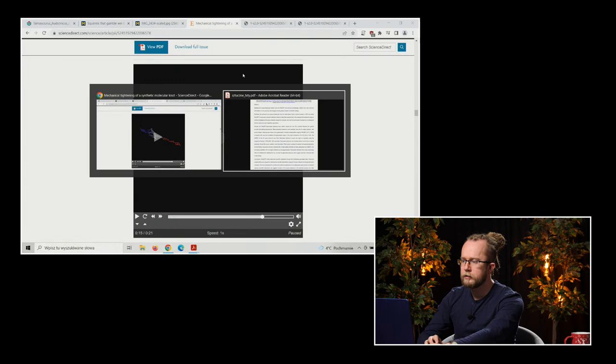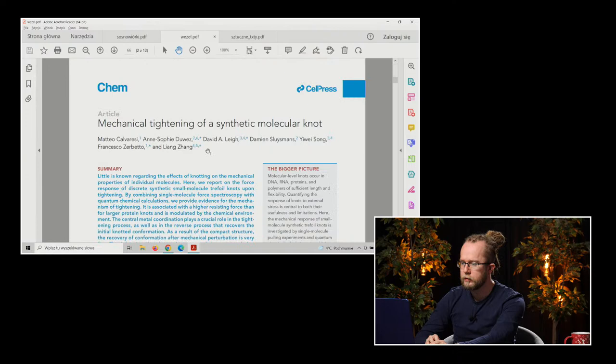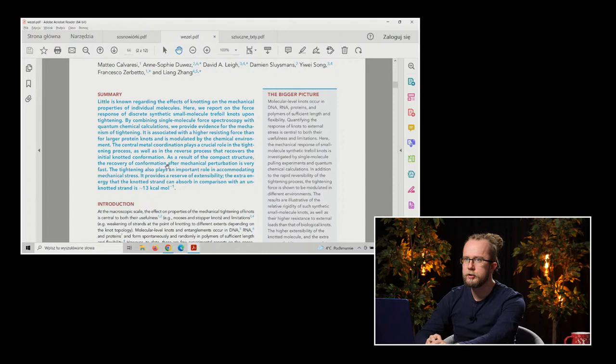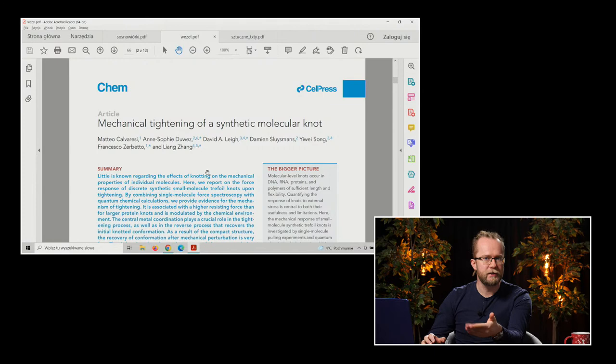W tym artykule został opisany następujący eksperyment. Na podstawie 50 rzeczywistych tytułów artykułów naukowych zostały wygenerowane abstrakty. Jeśli oglądacie Czytamy Naturę, no to wiecie doskonale, co to jest abstrakt. Natomiast jeżeli nie wiecie, no to zobaczmy sobie to na konkretnym przykładzie. Abstrakt to jest to. To jest streszczenie. To jest streszczenie artykułu, czyli tej długości mniej więcej tekst streszczający wszystkie najważniejsze rzeczy, które znajdują się w artykule.